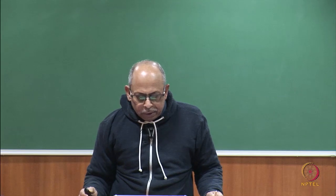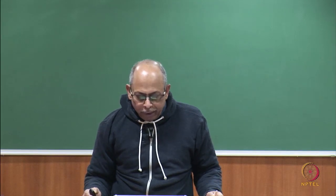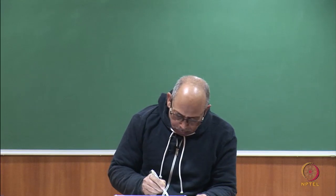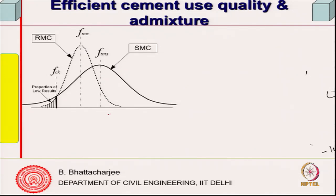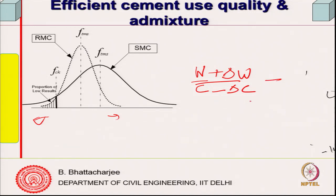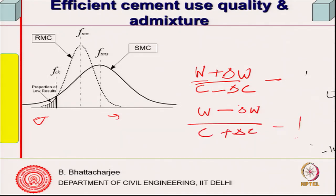Last class we were looking at efficient cement use, quality, and admixtures. If you improve your quality, standard deviation will be less because it depends upon how accurately you are mixing proportions — particularly the water-to-cement ratio. The strength variation depends on the water-to-cement ratio: strength is lowest when the water-cement ratio is highest, and lower water-cement ratio gives higher strength. Strength variation also depends upon proportions of all other ingredients.